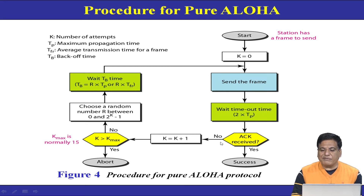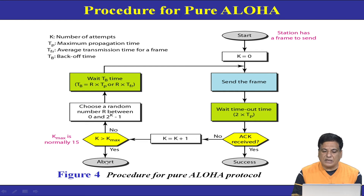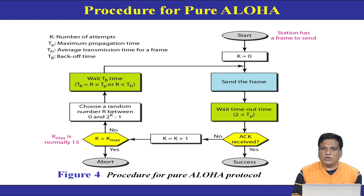If the acknowledgement is not received, we increment k by one, then compare k with k_max. The value of k_max is 15, meaning each station is given a maximum of 15 attempts to send the frame. If k exceeds k_max, it will abort the process and stop attempting to send the data. Otherwise, the station chooses a random number r, where r lies between 0 and 2^k − 1. For example, if k=3, r is chosen from 0 to 7.